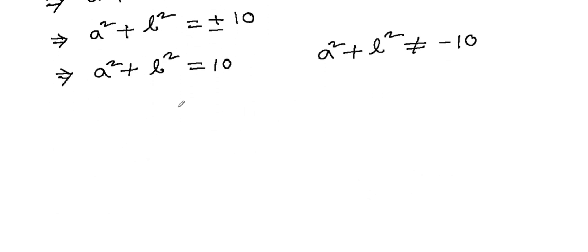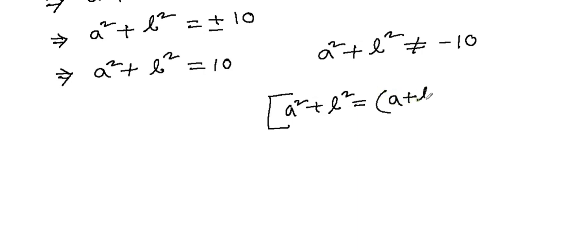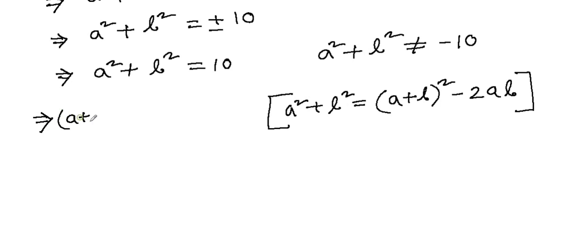Now, we know that a² + b² = 10, and we know the formula: a² + b² = (a + b)² - 2ab. So if we apply this formula here...